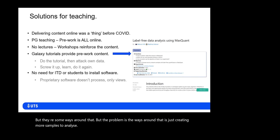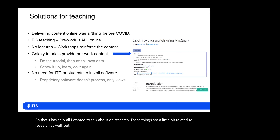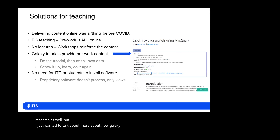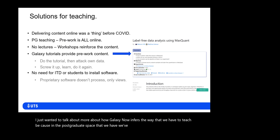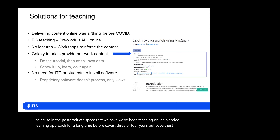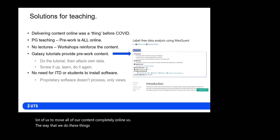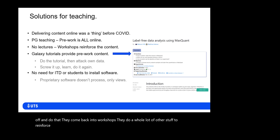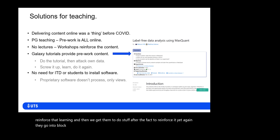Moving to how Galaxy informs the way we teach: in the postgraduate space, we've been using a blended learning approach for a long time before COVID — three or four years — but COVID forced us to move all content completely online. We have pre-work that students do, they come back into workshops to reinforce that learning, and then do stuff after the fact. They go into block-mode practical classes, generate lots of samples that go through the mass spectrometers and other instruments, and end up with their own data.